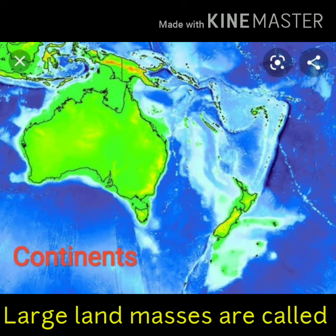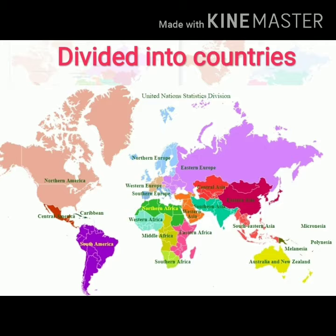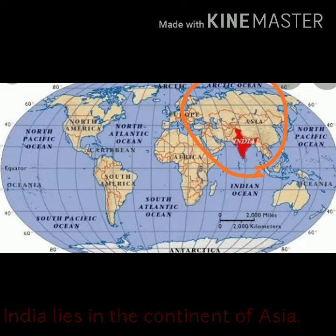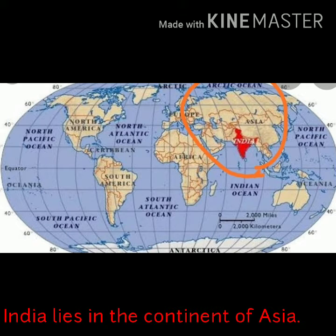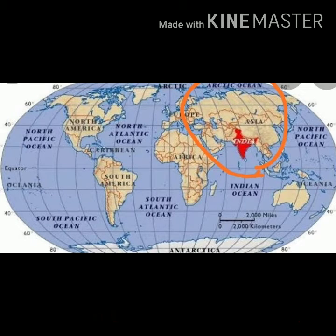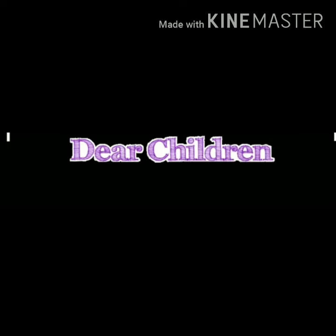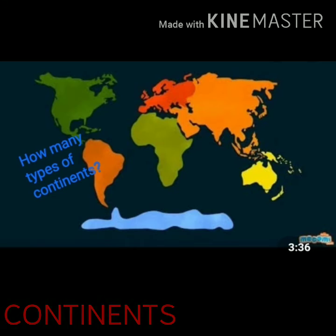Continents. The large land masses are called continents. Continents are further divided into countries. India lies in the continent of Asia. Dear children, I have explained about continents. Could you know how many types there are? Don't you know? No problem — I will explain it through singing.